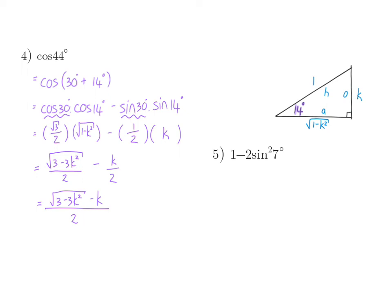In question 5, we see 1 minus 2 sin squared of 7, and we need to think, how can I rewrite 7 in terms of my known angle, which is 14. 14 is 2 times 7. I'm going to use one of my double angle identities and rewrite this as cos of 14 degrees. Using our new triangle, we know that cos of 14 is the square root of 1 minus k squared over 1.